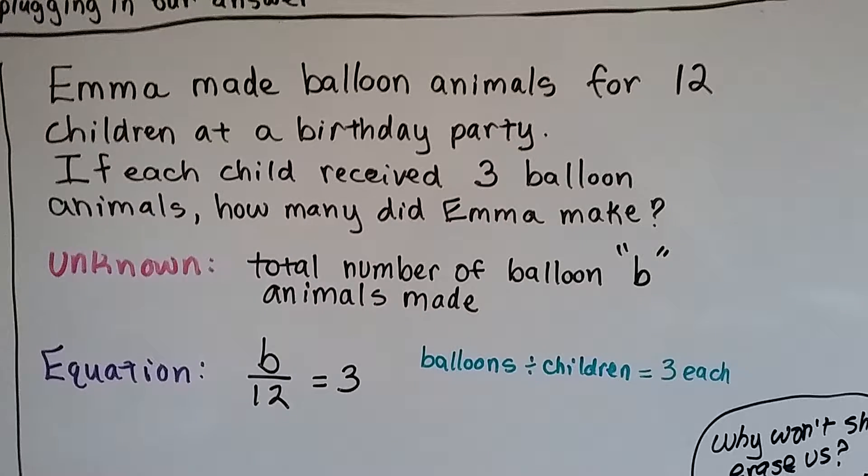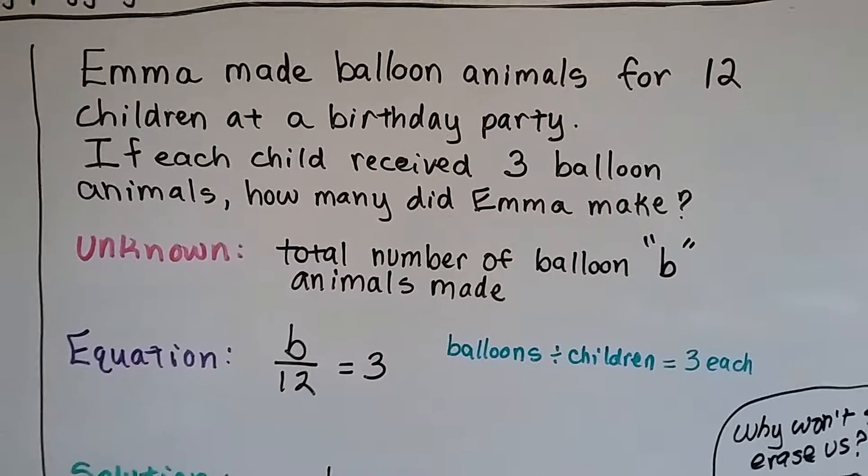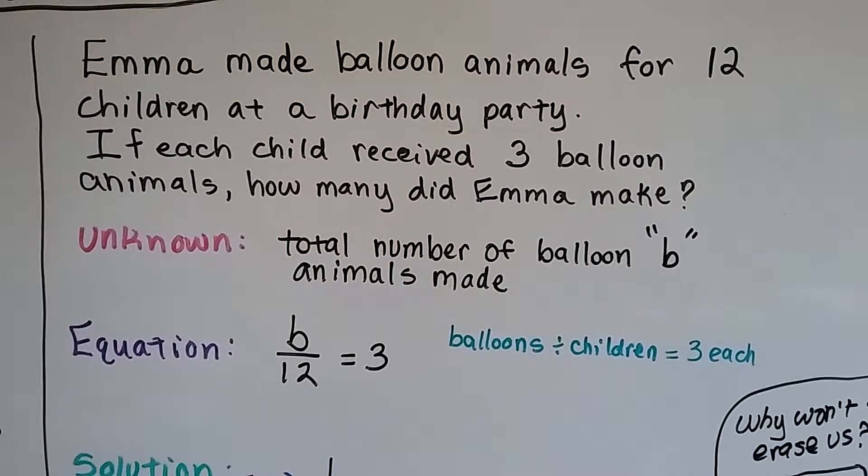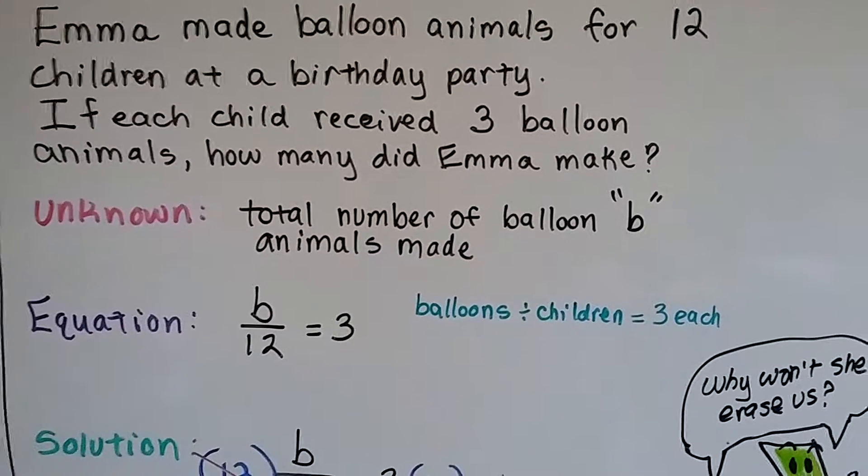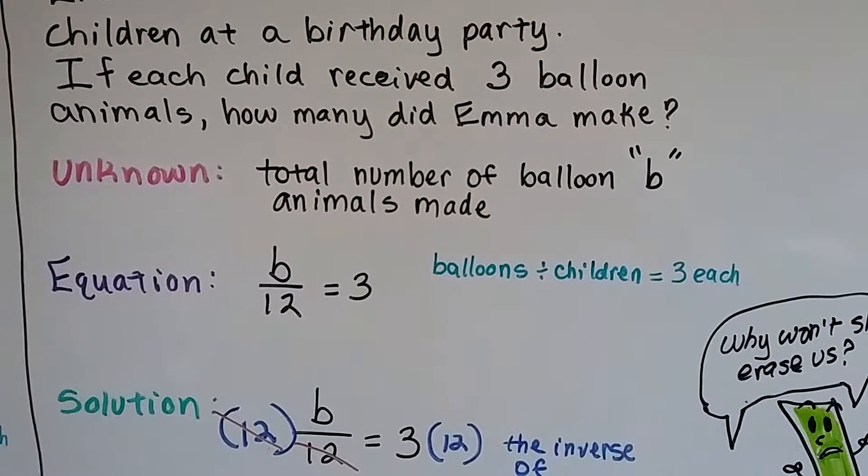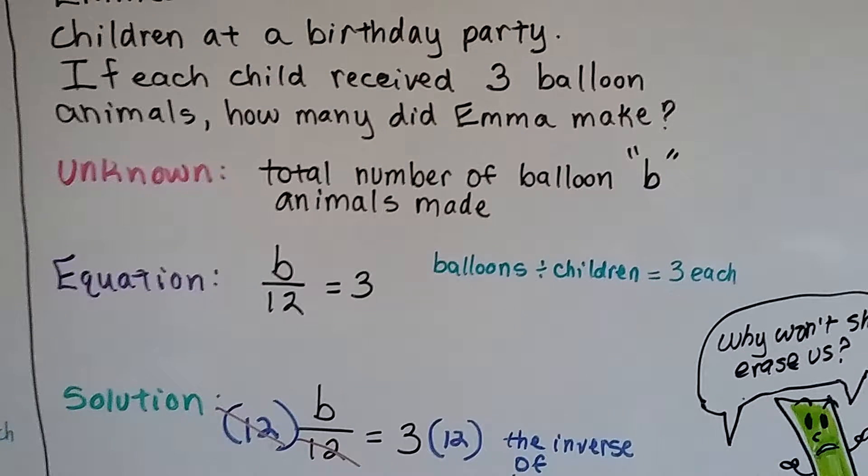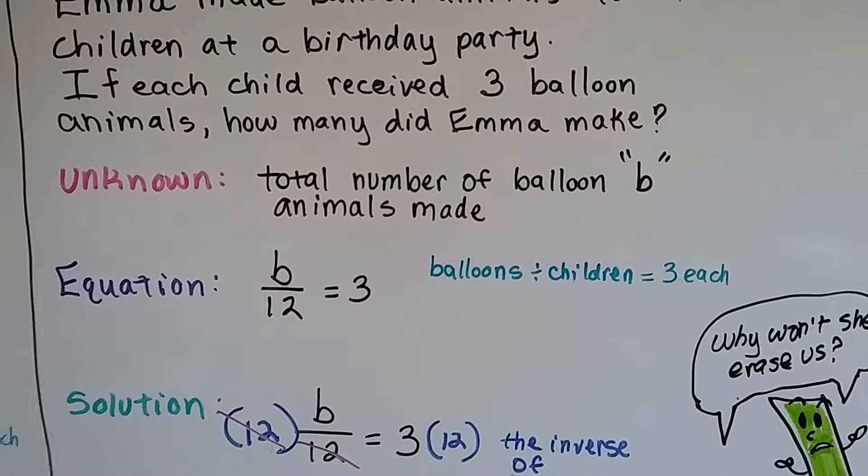Emma made balloon animals for 12 children at a birthday party. If each child received 3 balloon animals, how many did Emma make? So our unknown is the total number of balloon animals made. So our equation is going to be the b divided by 12 equals 3. That's the number of balloons divided by the children that each got 3.